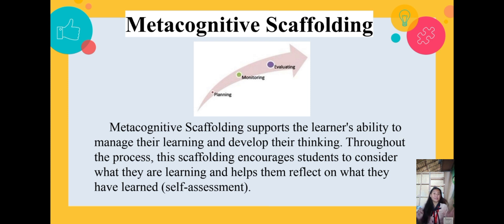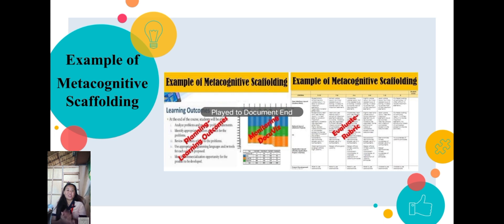The first part is planning scaffolds: establishment of learning goals, planning to achieve goals, and development of strategies for effective learning and management. The second part is monitoring scaffolds: tracking the learner's progress and monitoring potential outcomes. The last part is evaluation scaffolds: based on the results of planning and monitoring, learners are given the opportunity to determine effective or non-effective processes. Results may require revising or modifying the learner's strategies. Examples of metacognitive scaffolding include planning learning outcomes, monitoring documents, and evaluating rubrics.